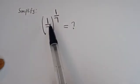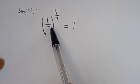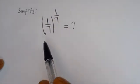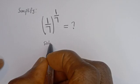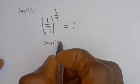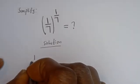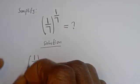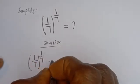Hello. How to simplify this nice math problem without using a calculator: 1 divided by 7 to the power of 1 divided by 7. Then we have 1 divided by 7 to the power of 1 divided by 7.